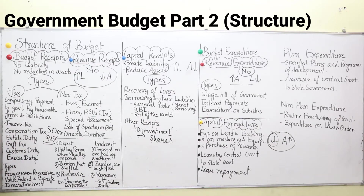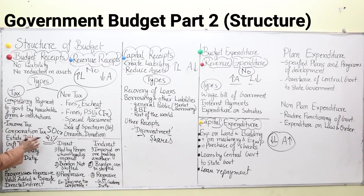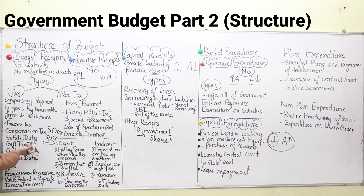Then comes estate duty. Estate duty is the tax on property assessed when a person has died. In India it was abolished in the year 1985, and it was 85% of the property assessed. So the tax on a dead person's property is known as estate duty. Then gift tax — the tax which is levied on gifts that you receive. If my father gives me a house as a gift, it will attract tax from the government. The recipient of any gift will pay tax to the government. That is gift tax.